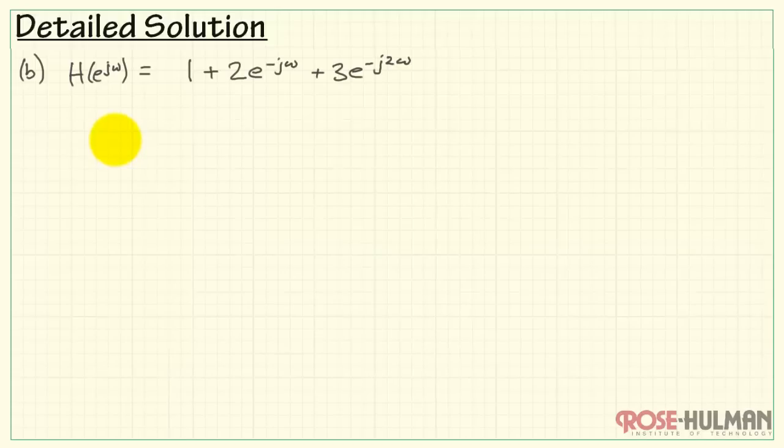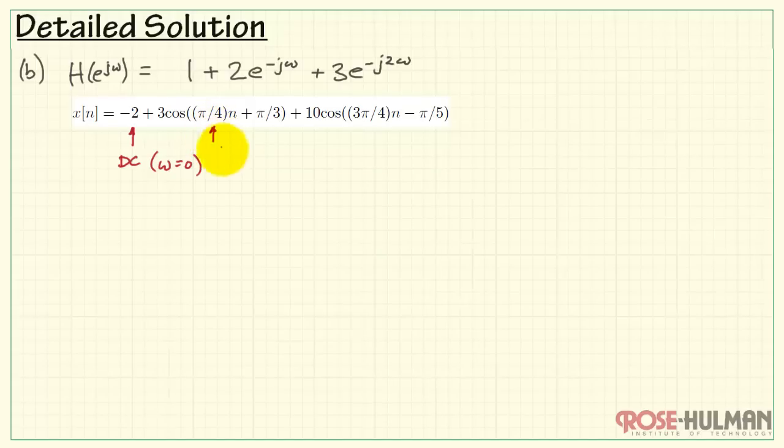Now, this ends up serving as the beginning of part B, as does the specific input for x of N. We have a DC component. This takes place at omega equals 0. We have another component at pi over 4 radians per sample, and a third component at 3 pi over 4 radians per sample. I need to evaluate the frequency response at each of these three different frequencies. I'll begin by evaluating at DC. This is when omega equals 0.